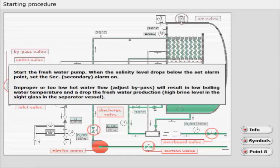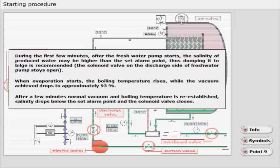High brine level in the sight glass in the separator vessel is higher than the set alarm point, thus dumping it to bilge is recommended. The solenoid valve on the discharge side of the fresh water pump stays open.